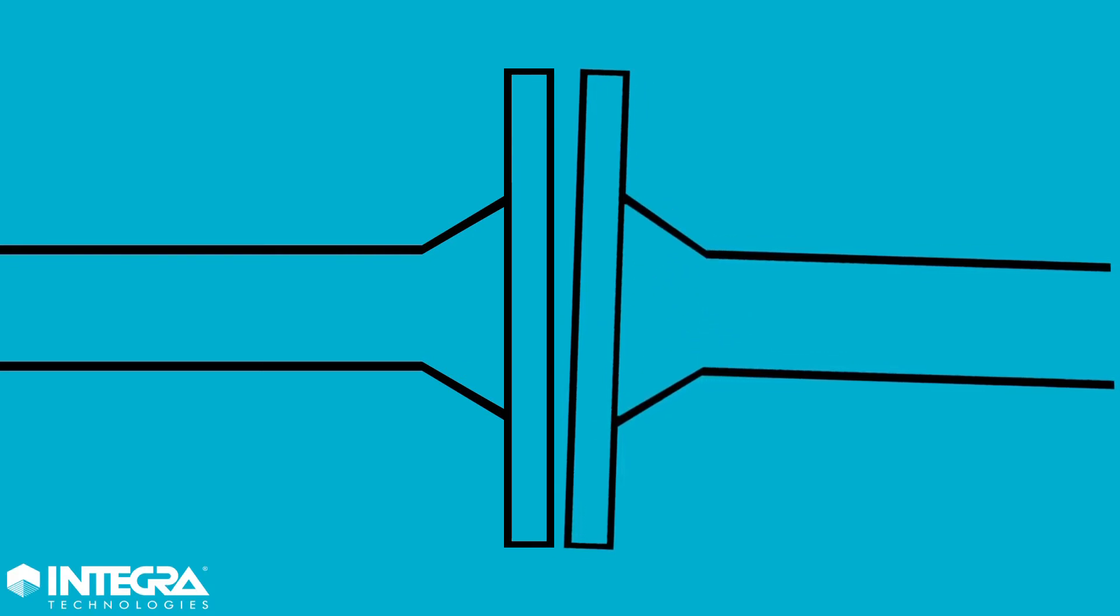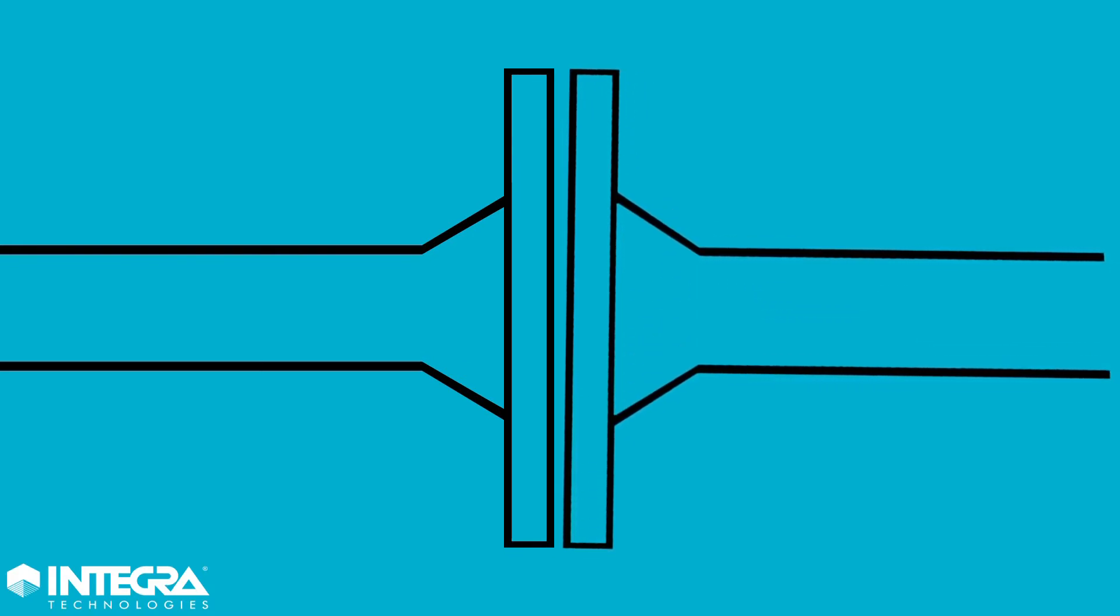Parallelism is the alignment of the flanges so that there are equal distances between the flange faces at all points around the circumference of the joint, therefore making the flange faces parallel to each other.